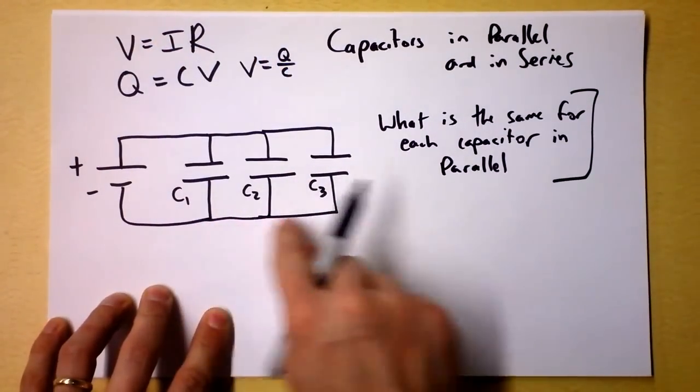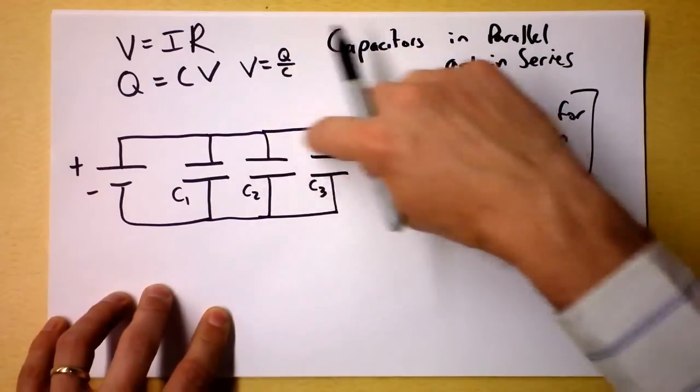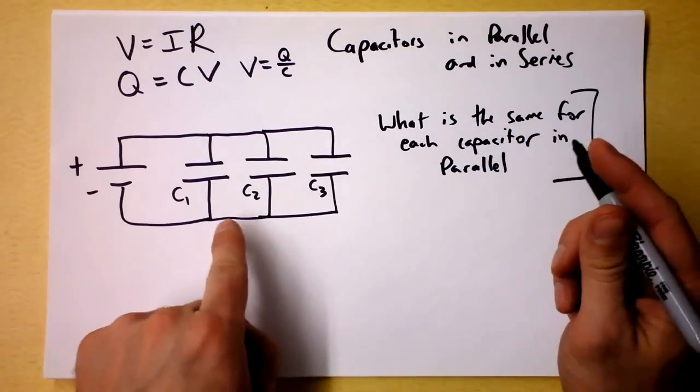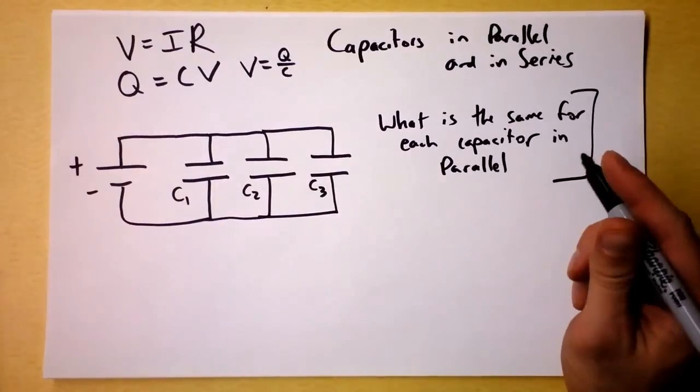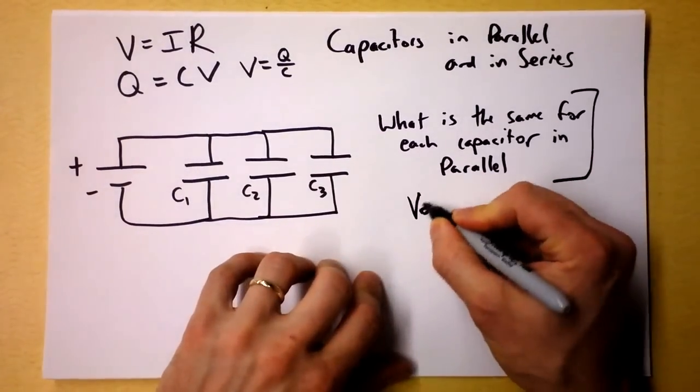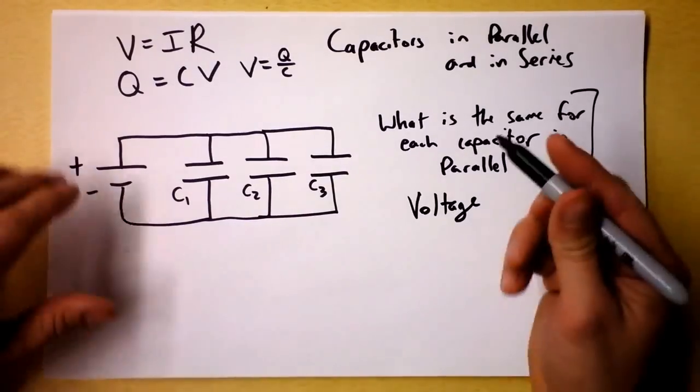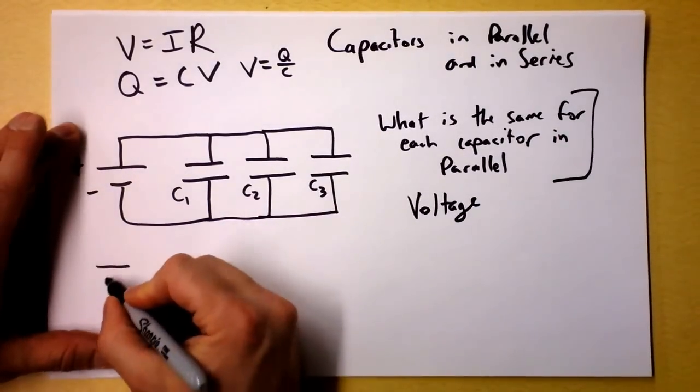They're connected by a wire. So this is an equipotential down here. That's an equipotential up there. So the capacitance is different and the charge is different, but the voltage is the same for each, which gives us some really cool ability.